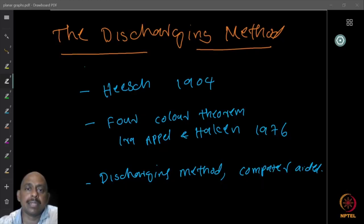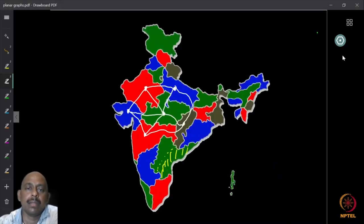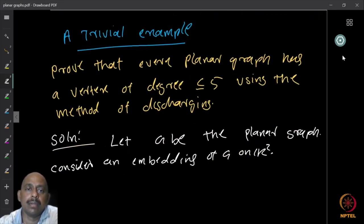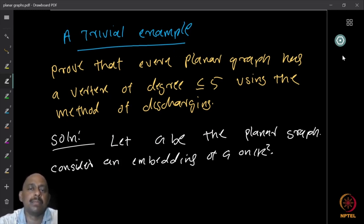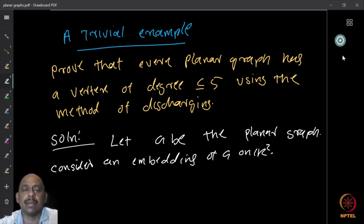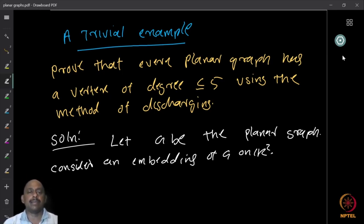Let us now look at the discharging method. We start with a very small, trivial example. In fact, to prove this you don't really need any discharging method — we can directly prove it from some of the simple results we have studied — but we want to use it to introduce the idea of discharging. We want to prove the following: every planar graph has a vertex of degree less than or equal to 5, and we want to prove it using the discharging method.